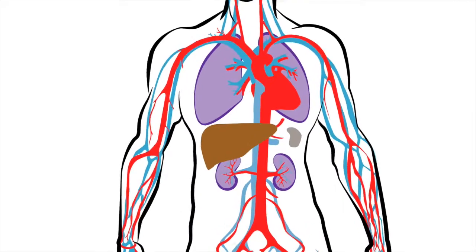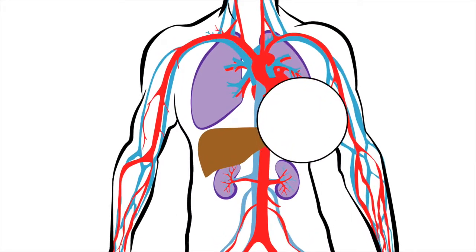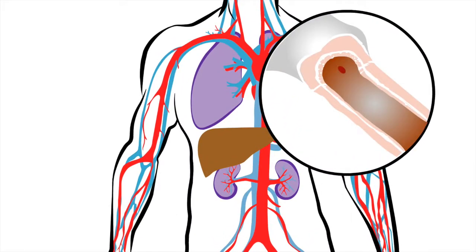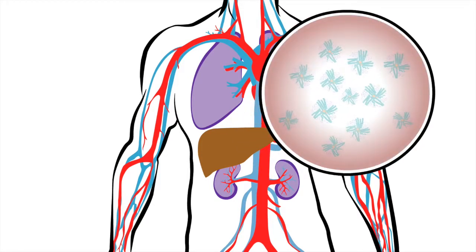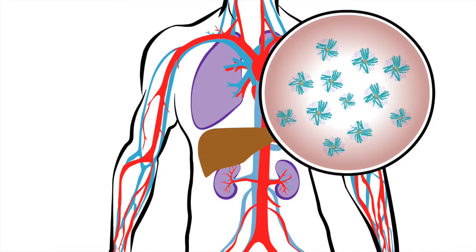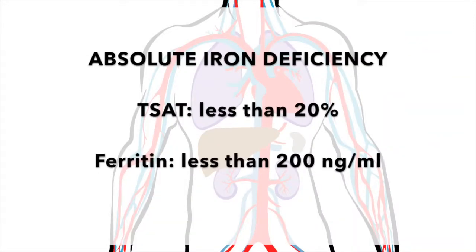Absolute iron deficiency occurs when there is not enough iron in the system available for RBC production, including iron stored in the RES and liver. Absolute iron deficiency is characterized by TSAT levels of less than 20% and ferritin levels of less than 200 nanograms per milliliter.